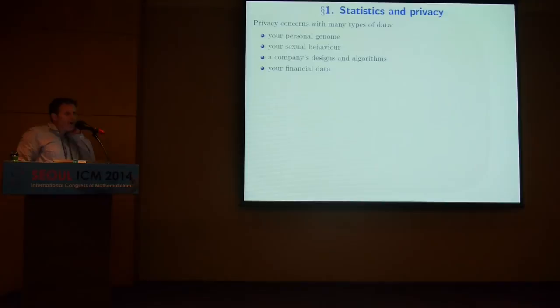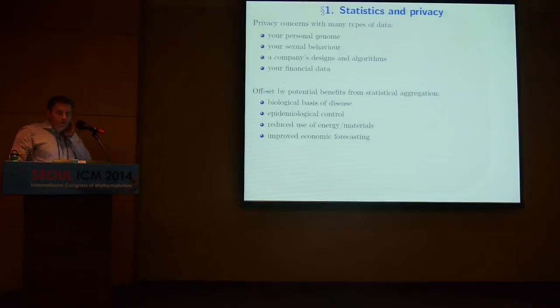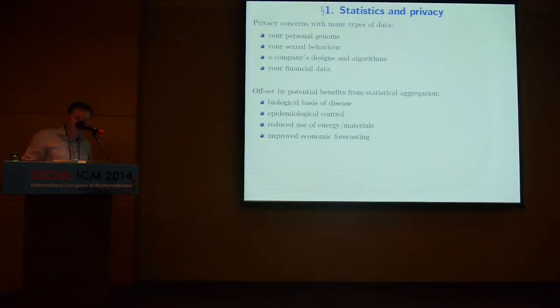In this talk I'm going to give two vignettes — I will talk about privacy and computational constraints, but not distributed estimation. Lots of data is being collected: your genome, questionnaires about sexual behavior, financial data — with obvious privacy concerns. At the same time, at a societal level there are benefits: sexual behavior data can inform epidemiology about how diseases spread; financial data can improve economic forecasting. There's a natural tension between privacy at an individual level and larger-scale community benefits. We'd like to formalize that tension mathematically.